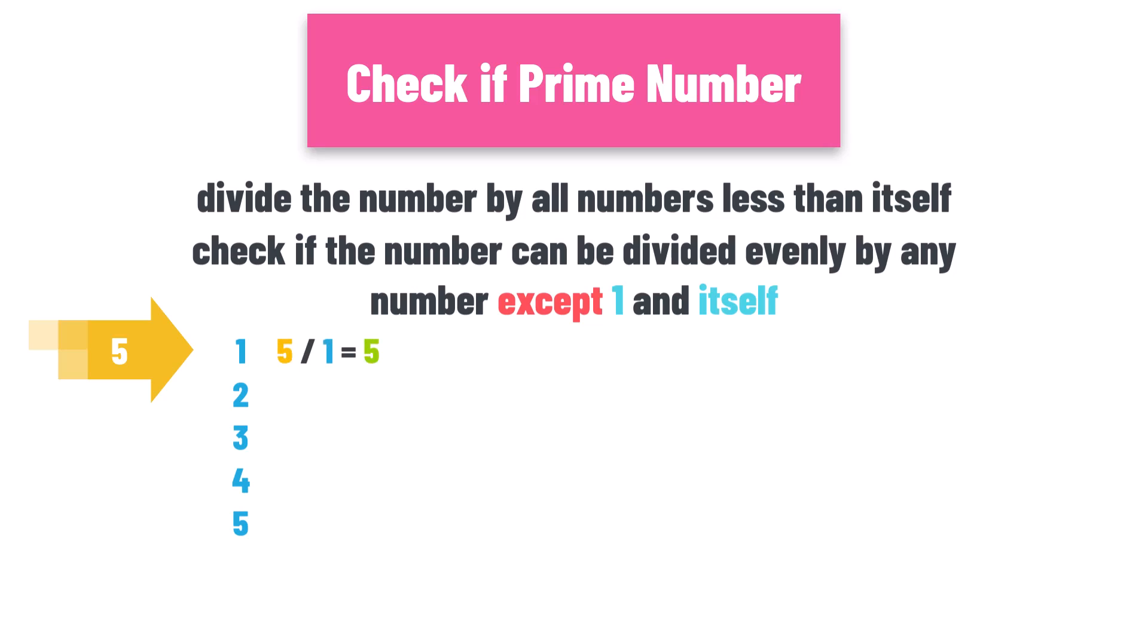5 divided by 1 is 5. It can be divided evenly. 5 divided by 2 is 2.5. It cannot be divided evenly because the result is a decimal number.